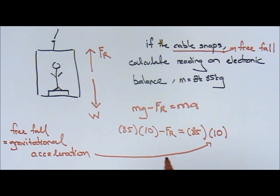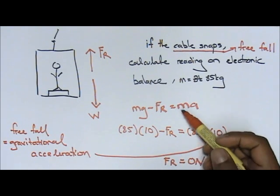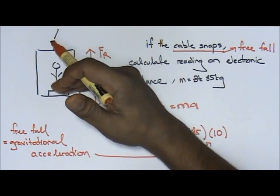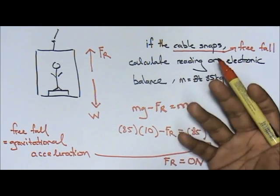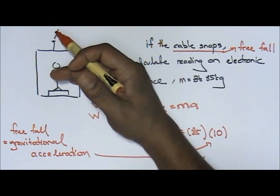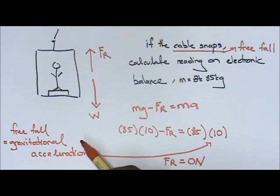Now, if you solve this, you will get FR equals zero newtons. If FR is zero newtons, it means you will be floating inside the lift. So the reading on the electronic balance is basically zero because you're already floating in the lift.